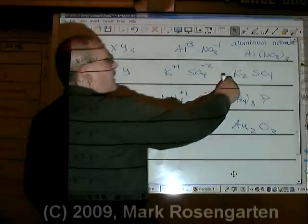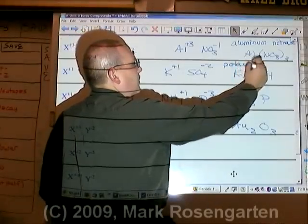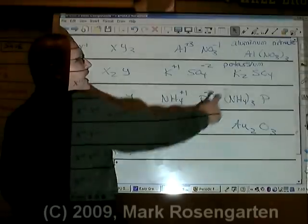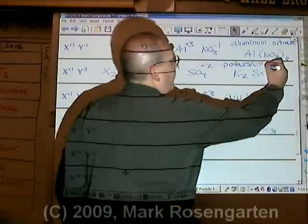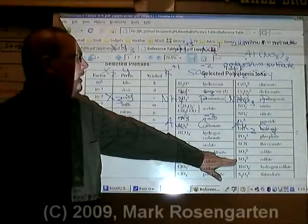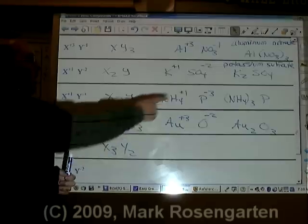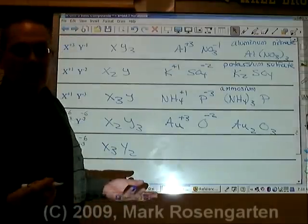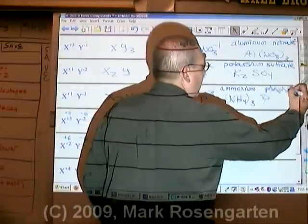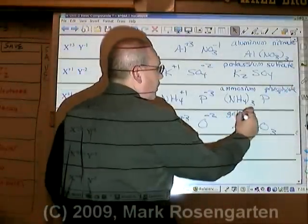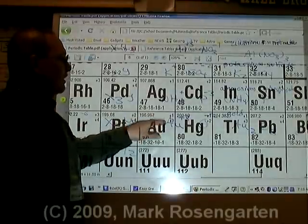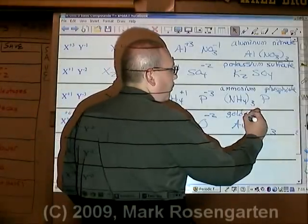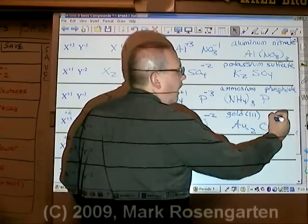As far as the naming is concerned, K is called potassium. Potassium only has one charge listed, so we don't need a Roman numeral. And SO₄ is called sulfate, which you find on reference table E. NH₄ is called ammonium. P is called phosphide. Au is called gold. Gold has two charges listed, one and three. And this is the plus three version, so we call this gold three oxide.